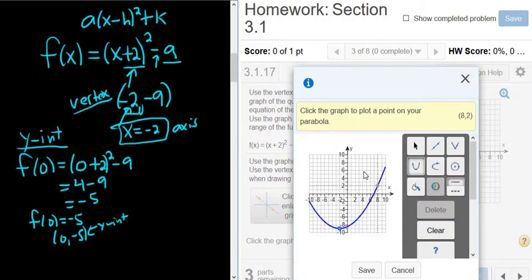Then it says click the graph to plot a point on your parabola. Now this is kind of deceiving. If I plot another point on the parabola and it's correct, it will mark it wrong. It actually wants the y-intercept. So if you don't pick the y-intercept, you'll actually get it wrong. So we figured it out. It's 0, negative 5. So there it is. 0, negative 5. So I'm going to left click.